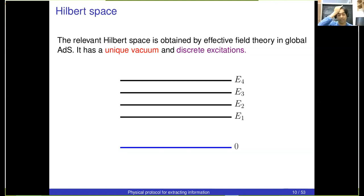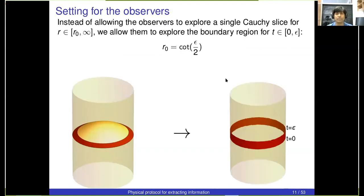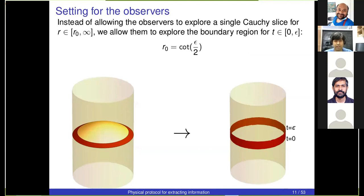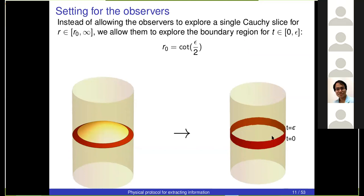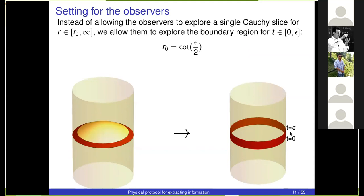This is a low-energy sector of the theory — there's some theory of quantum gravity in global AdS and we are considering the low-energy sector. So as I said, we have observers who are going to explore the details of a state of low-energy excitations. These observers live in this annular region, but it's technically more convenient to think of them as living right next to the boundary, confined to making observations in a time band that runs between time zero and time epsilon. The observers are allowed to make observations within this time band.